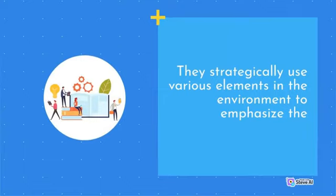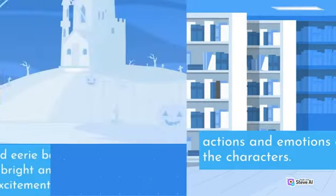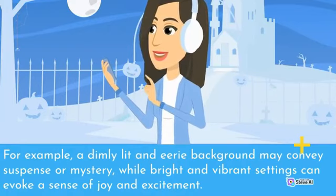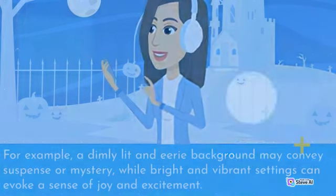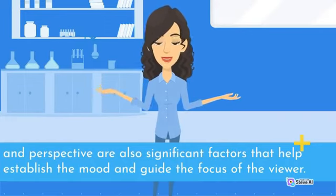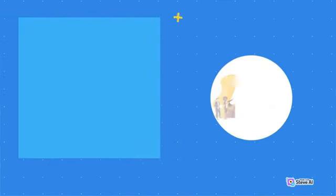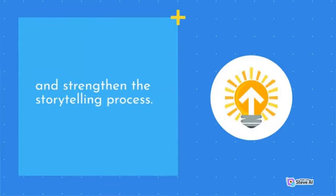Enhancing Storytelling Through Set Design: Set designers strategically use various elements in the environment to emphasize the actions and emotions of the characters. For example, a dimly lit and eerie background may convey suspense or mystery, while bright and vibrant settings can evoke a sense of joy and excitement. Perspective and composition are also significant factors that help establish the mood and guide the focus of the viewer. By considering every aspect of the set design, set designers can cleverly evoke emotions and strengthen the storytelling process.